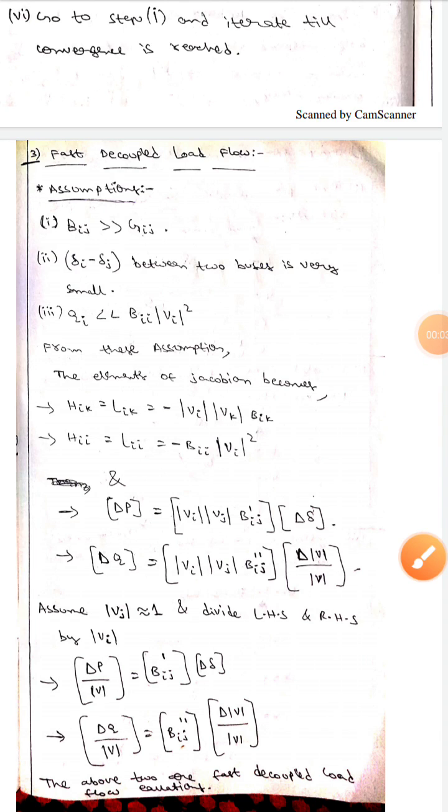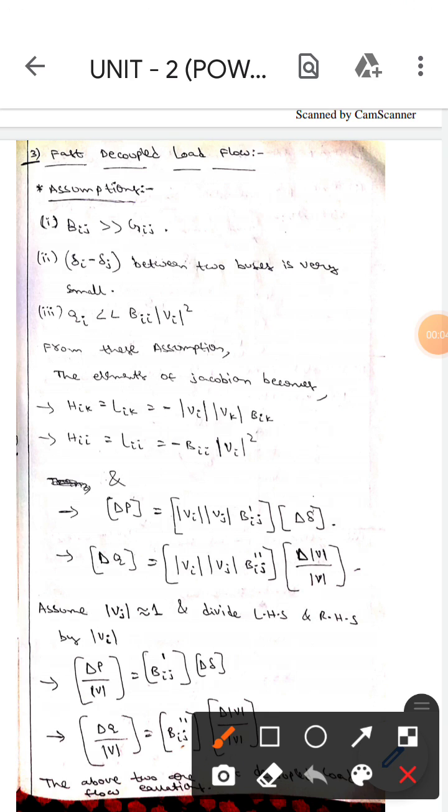Hello guys, I hope you are all fine. Today we are here to discuss fast decoupled load flow. Let's get on topic. There are three assumptions in it. The first assumption is Bij greater than Gij.